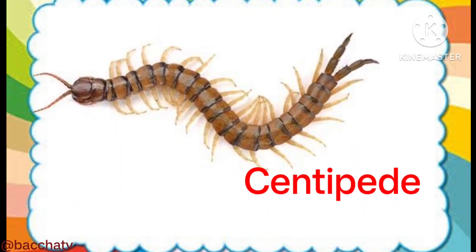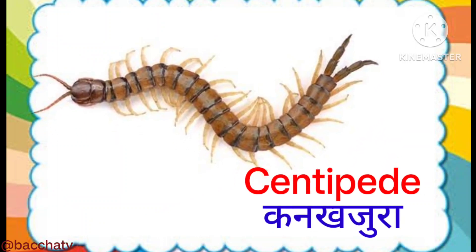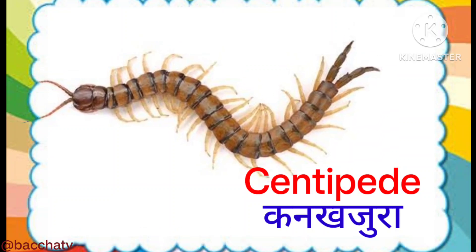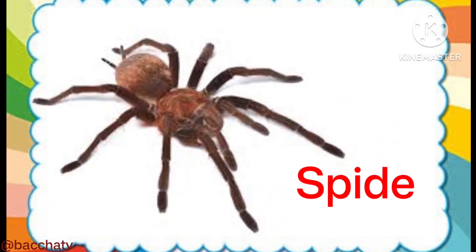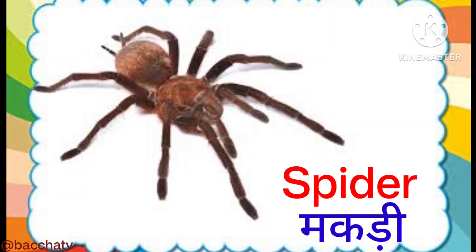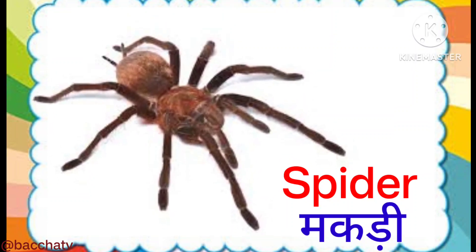Centipede — this is a centipede. Centipede means kankhojura. Spider — this is a spider. Spider means makkadi.